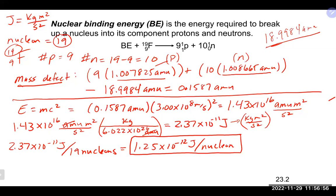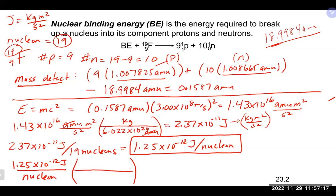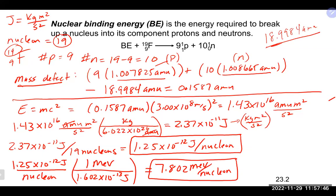A very common unit is also MeV per nucleon. We convert using 1.602×10⁻¹³ joules per MeV: dividing gives approximately 7.802 MeV per nucleon. So there are two common ways to report the binding energy per nucleon — joules per nucleon or MeV per nucleon.